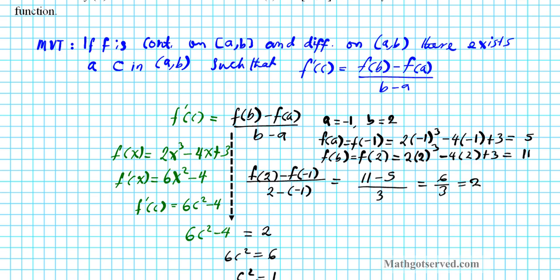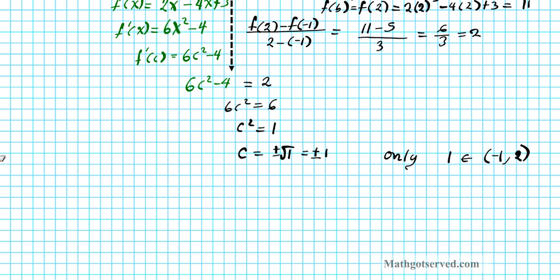Okay, the other value is an endpoint, and an endpoint is not included for the c's that satisfy the conclusion of the MVT. Alright, so let's write down our final statement, the c that satisfies the conclusion of the mean value theorem is c equals positive 1. Alright, so that's that.